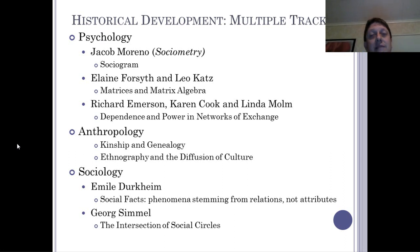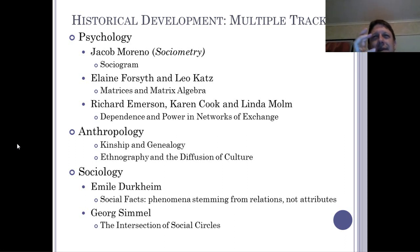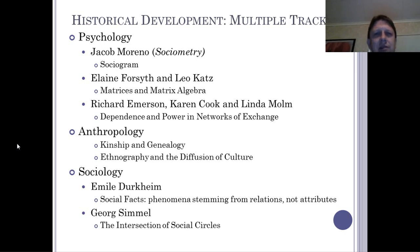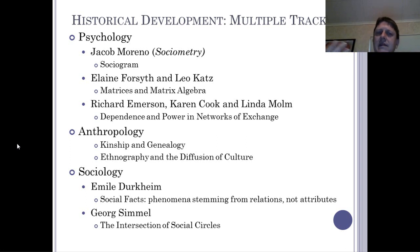Elaine Forsythe and Leo Katz in the first half of the 20th century respond to Jacob Moreno by saying: that's wonderful, lines and circles, but it's a little unsystematic, as both Prell and Hansen will have referred to. You can do a lot of things with those circles and lines, move them all over, and there's no rhyme or reason, no principle for how you create that — it's more an art. Let's be more mathematical about it.